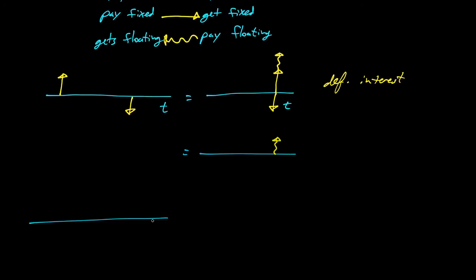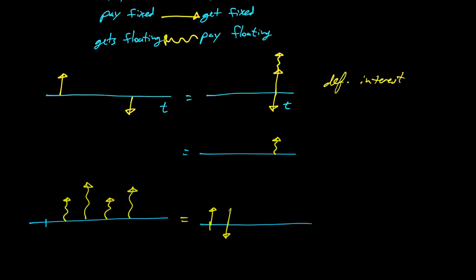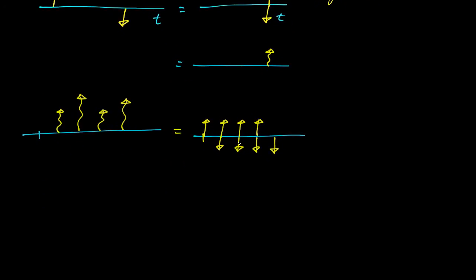We can use this to handle a series of payments. Here is a series of four floating interest rate payments — drawn at different heights because the floating rate could be changing. We can rewrite this: the first payment converts to up-down, the second one will be up-down, the third one up-down, and the last one up-down.